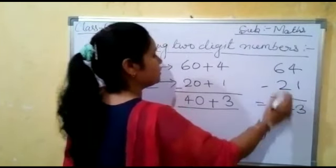Now let us subtract: we subtract the ones first, so 4 minus 1 becomes 3. Then we subtract the tens, so 6 minus 2 becomes 4. The answer is 43. You can check — both answers are correct. In this way we can subtract two-digit numbers. Thank you.